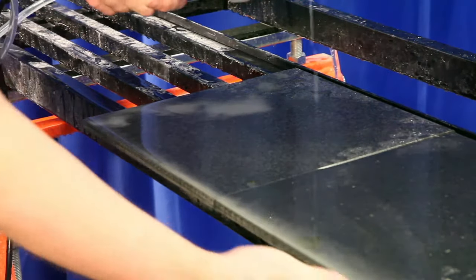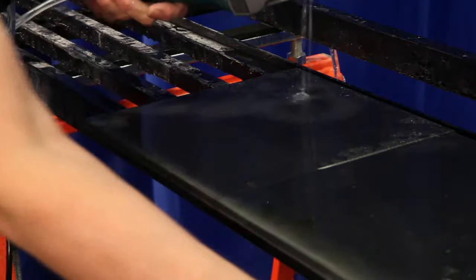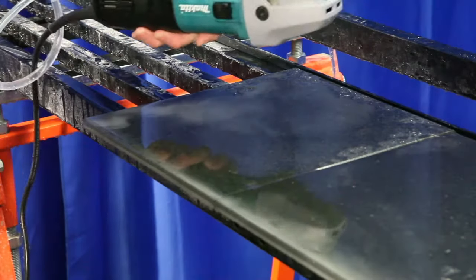The big thing with the 50 grit is we want to make sure all the saw marks and our chips are out of there and then we're going to move on to the 100.